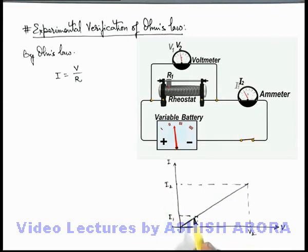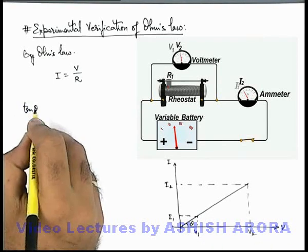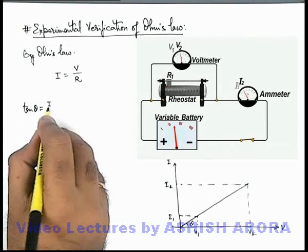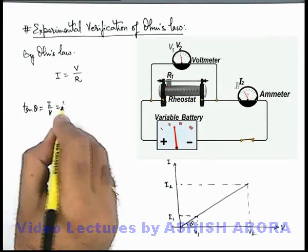And in this situation you can see here, the value of slope of this straight line tan theta will get as I by V, which can be written as 1 by R.